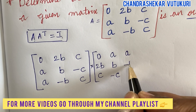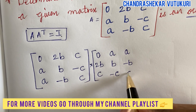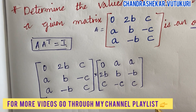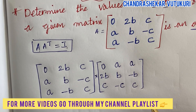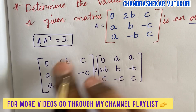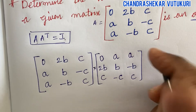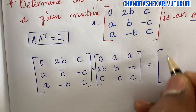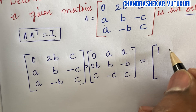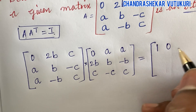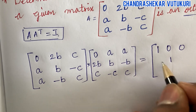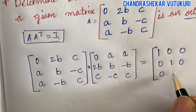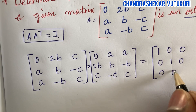I have uploaded content for calculus for R22 regulation as well as R18 regulation — M1 as well as M2 supply papers too. So A times A transpose is equated to the identity matrix. As it is a three-by-three matrix, the diagonal elements remain one and the upper and lower triangle elements remain zero.